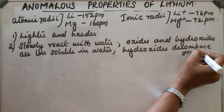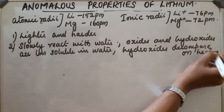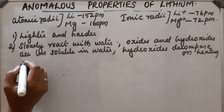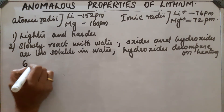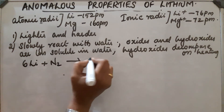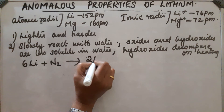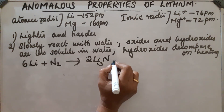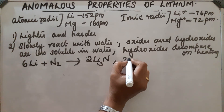Both lithium and magnesium react with nitrogen present in air during combustion, forming nitrides through direct reaction. For example, 6Li + N₂ gives lithium nitride.